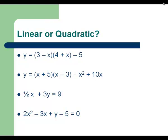Look at the first example. If you FOIL out the parentheses, you'll get 12 plus 3x minus 4x minus x squared and then minus 5. We have an x squared term, therefore this is a quadratic equation. Try to FOIL the next one. Pause until you're ready.